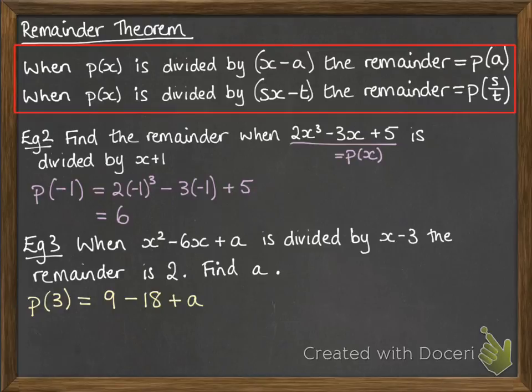So this tells us that when we put 3 into our polynomial, since it was divided by x minus 3, then we will get a remainder of 2. So put 3 in and you get 9 minus 18 plus a, and we know that it gives us a remainder of 2. So then you just solve that equation and we get that a equals 11.